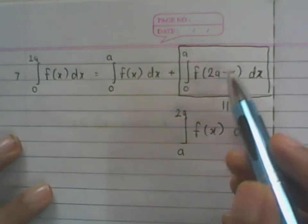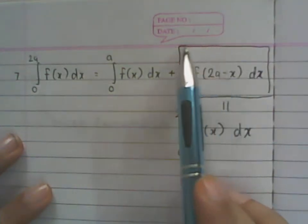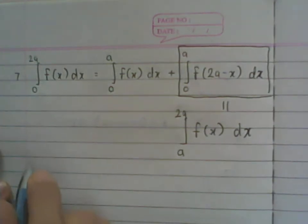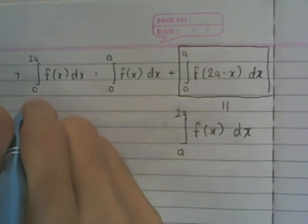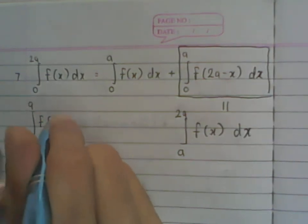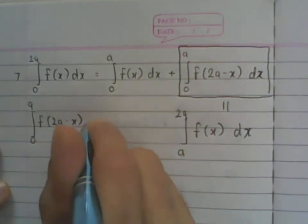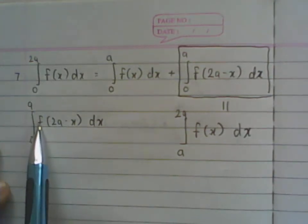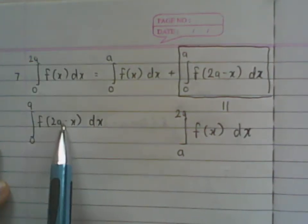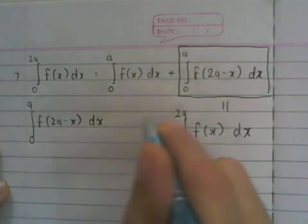So let us focus on this. We can start from the integral from 0 to a of f(2a - x)dx. This looks like a composite function—f of something which is an internal function of x. So we will do u-substitution.